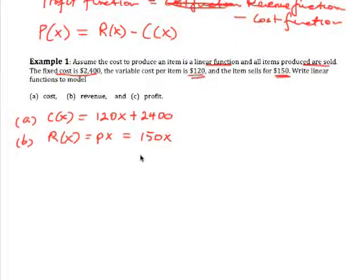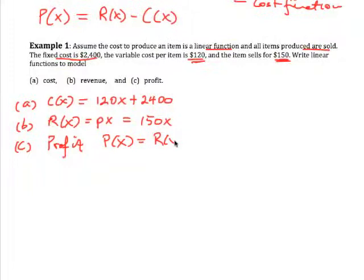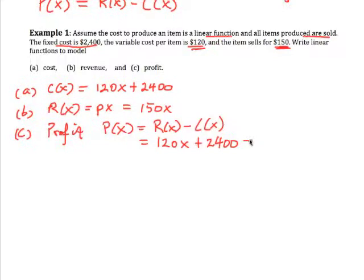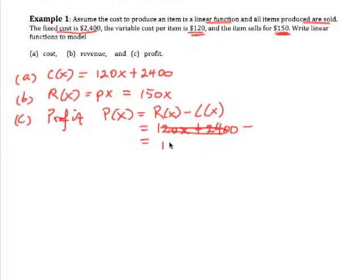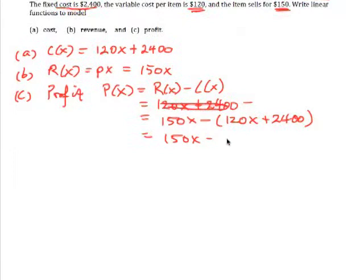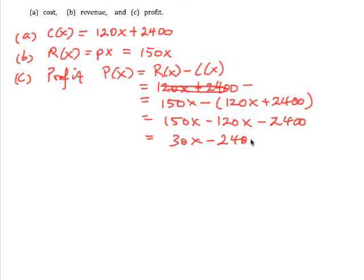Thirdly, the profit is going to be given by the profit function, which is simply the revenue function minus the cost function, which in this case is $150x minus $120x plus $2,400. So this will be $150x minus $120x minus $2,400, distributing the negative sign. And so this will be $30x minus $2,400, and that will be our profit function.